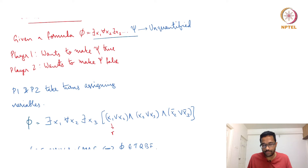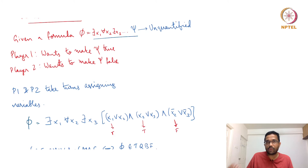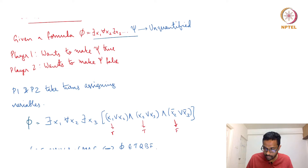If player one sets x1 to true, the first clause is already true. Now what can player two do? If player two sets x2 to true, the second clause is already true, but part of the third clause becomes false because x2 complement goes to false. However, player one then gets to choose x3 and can set x3 to false, making x3 complement true, so the entire formula evaluates to true. This does not lead to a win for player two.